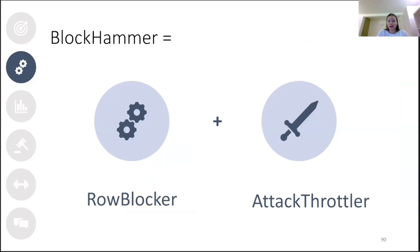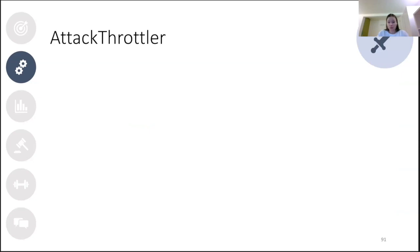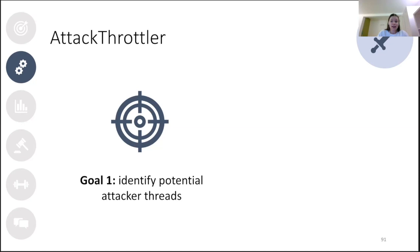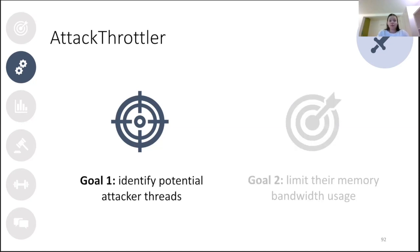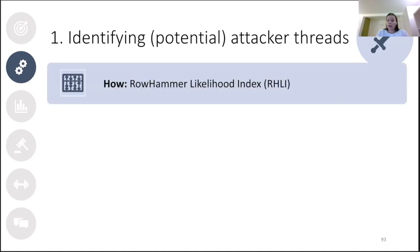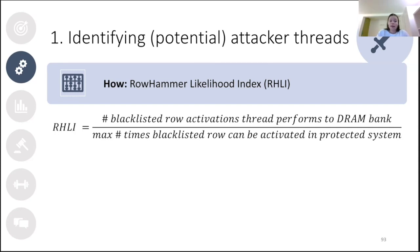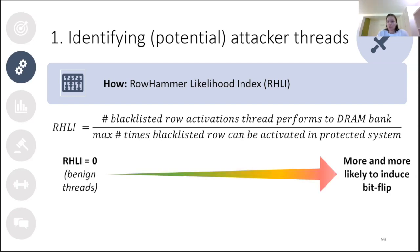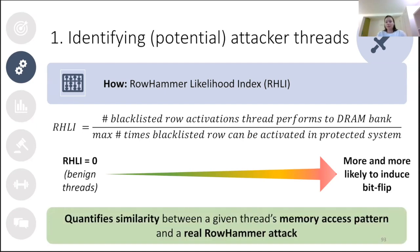Let's move on to the second big component of BlockHammer: Attack Throttler. Attack Throttler has two main goals: identify threads likely to cause rowhammer attacks, and limit their memory bandwidth usage. To identify attacker threads, the paper introduces the Row Hammer Likelihood Index (RHLI), which estimates how likely a thread is to induce a bit flip. We count the number of times each thread activates a blacklisted row per bank, normalized over the maximum number of times a blacklisted row can be activated in a BlockHammer-protected system. For a benign thread, RHLI should be zero or close to zero; as a thread's RHLI approaches one, it is increasingly likely to induce rowhammer bit flips.